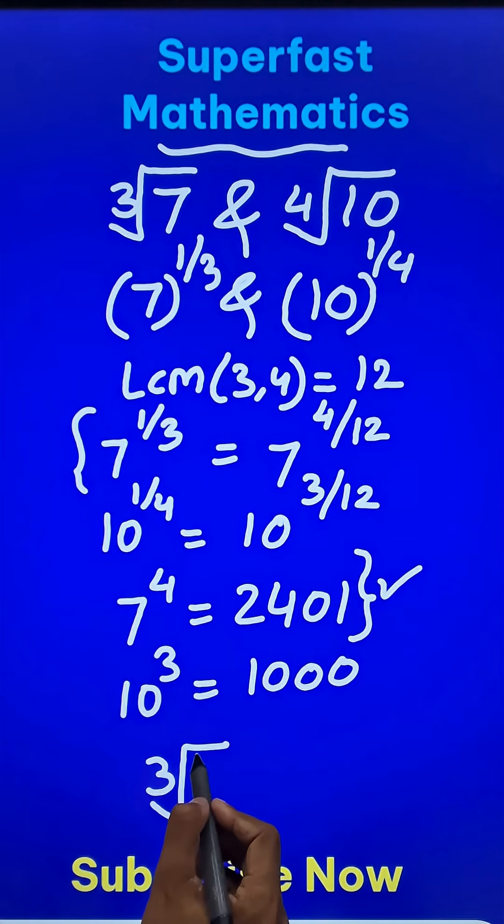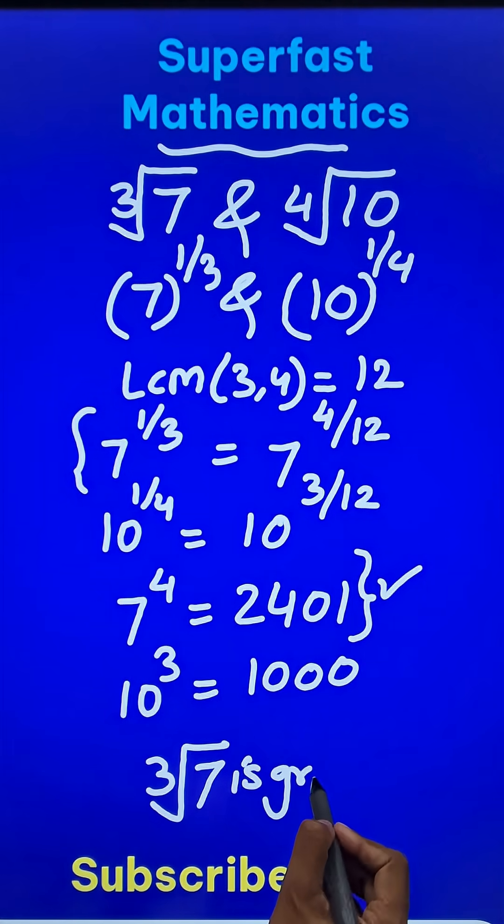And therefore, cube root of 7 is the greater one.